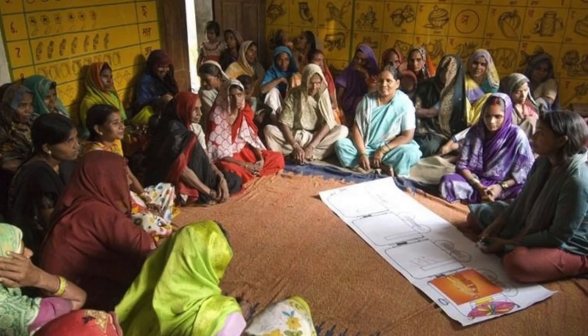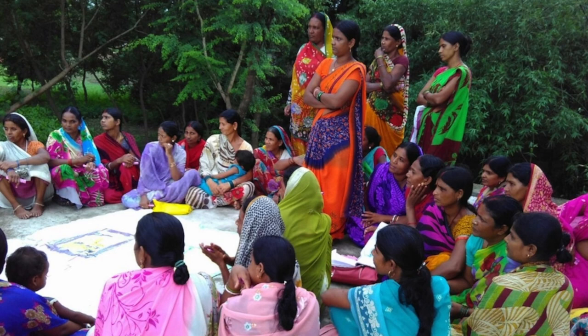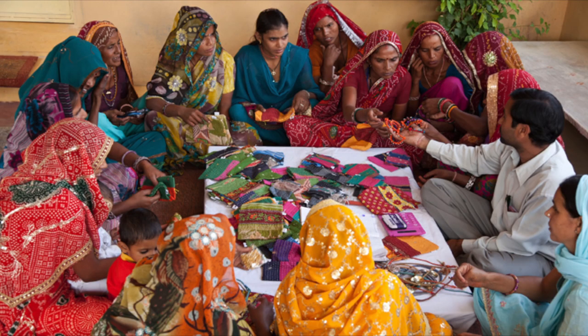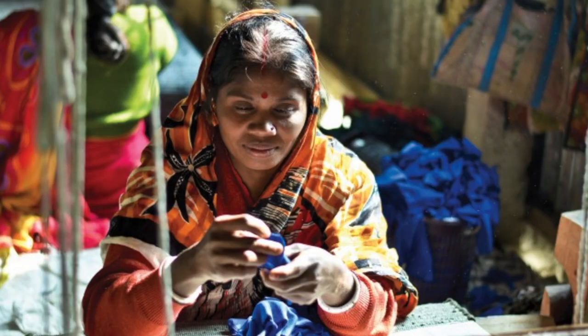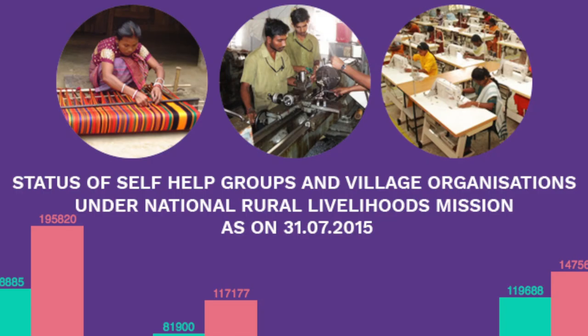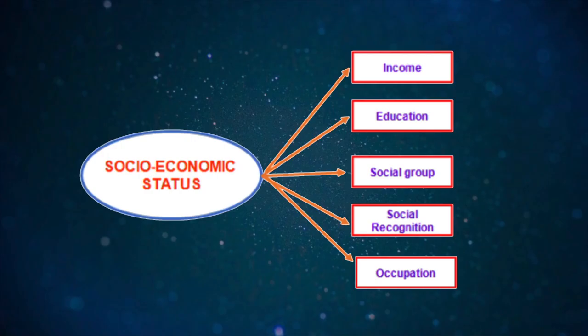Therefore, we cannot study them directly. To study these concepts, we first define the constructs in terms of observable characteristics. Thus, we may define socioeconomic status as the position of an individual in a society in terms of income, education, social group, social recognition, and occupation. These are observable characteristics and are called indicators of socioeconomic status. The figure depicts some of these indicators: income, education, social group, social recognition, and occupation.